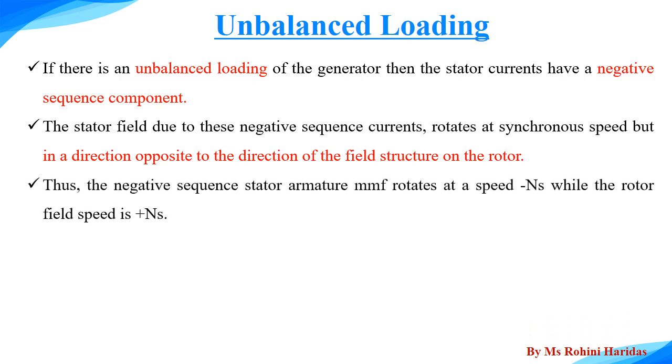Thus, the negative sequence stator armature mmf rotates at a speed minus ns while the rotor field speed is plus ns. Therefore, there is a relative velocity of twice ns between two. Here, you can apply the basic concept of the relative speed.